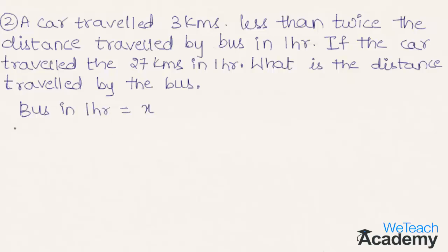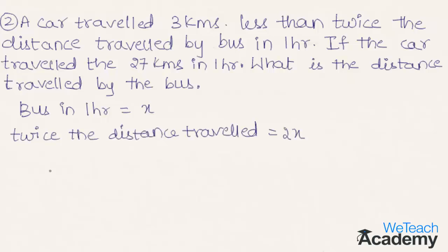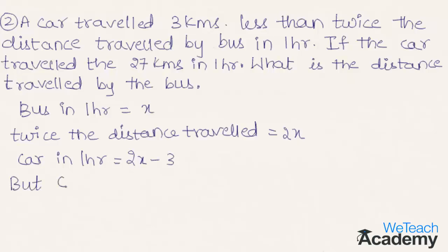Twice the distance travelled by the bus can be represented as 2x. The distance travelled by the car in 1 hour is 3 kilometres less than twice the distance travelled by the bus, which can be represented as 2x minus 3. According to the problem, the distance travelled by the car is 27 kilometres.